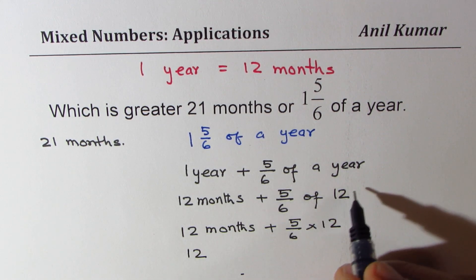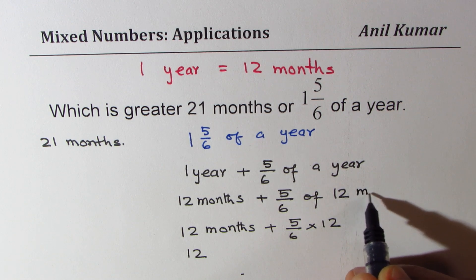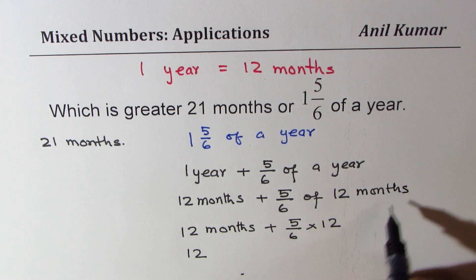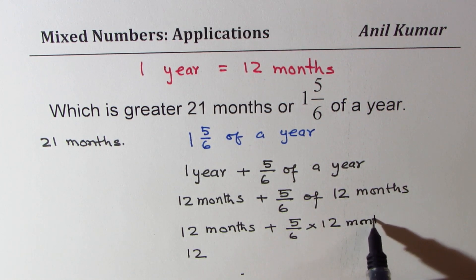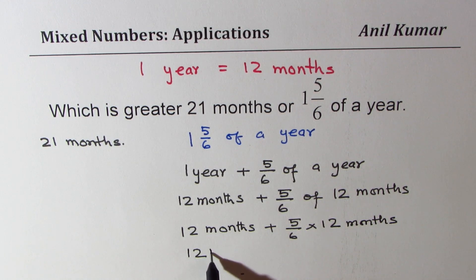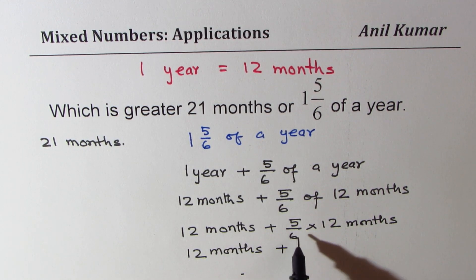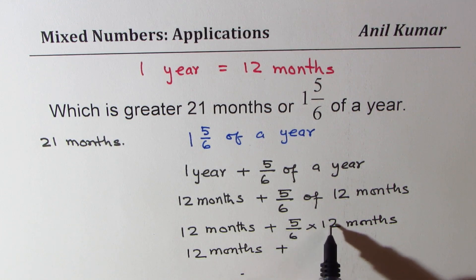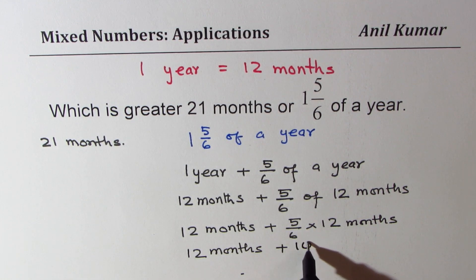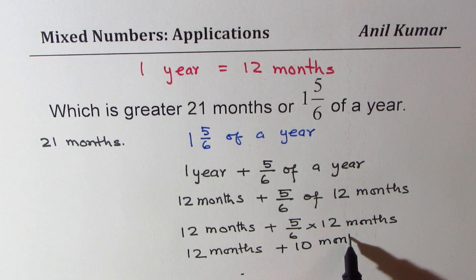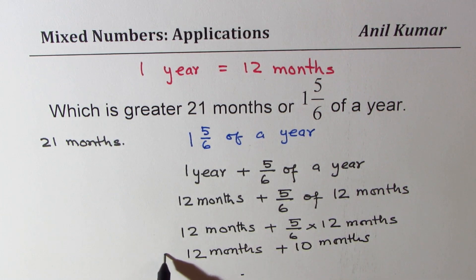months. This is all in months, right? So we get 12 months plus 60 divided by 6 is 10, plus 10 months. So what do you get? You get this side as 22 months.